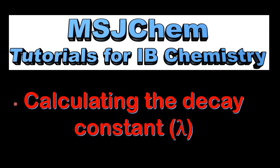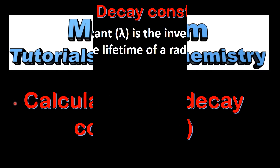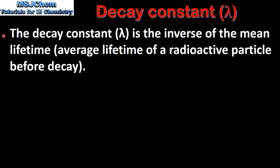This is MSJChem. In this video I'll be looking at calculating the decay constant. The decay constant, which is given the symbol lambda, is the inverse of the mean lifetime. The mean lifetime is the average lifetime of a radioactive particle before decay.